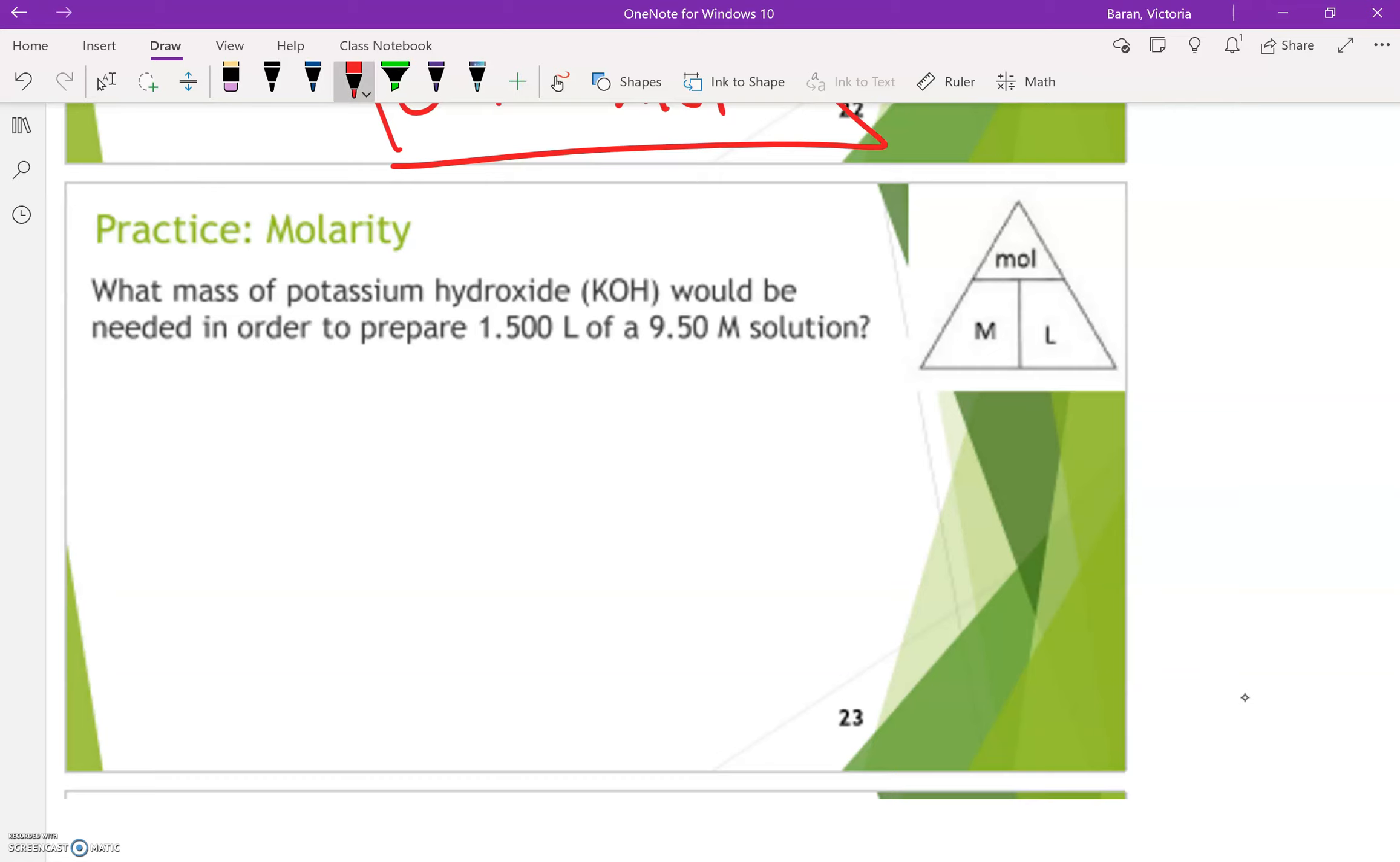All right. So it says, what mass of potassium hydroxide? So we are going to be finding moles. Now this is the solute. So when you're making a solution, you're dissolving something in something else. So we are taking KOH, which is potassium hydroxide.